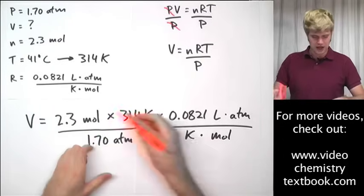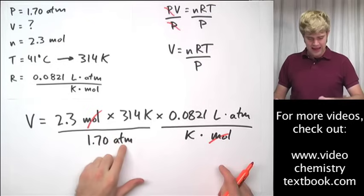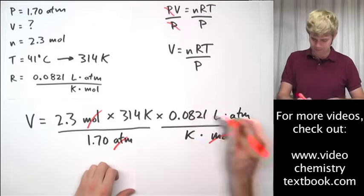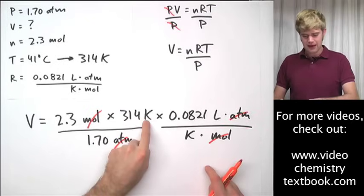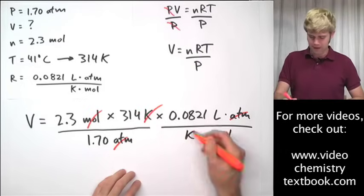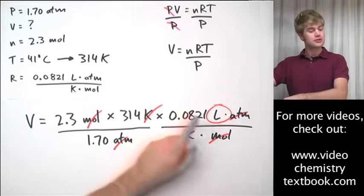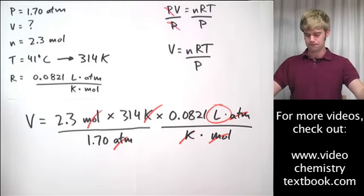Moles up here, moles down there. atm down here, atm up there. Those cancel out. Kelvin up here, Kelvin down there, all right? Which means that I'm left with only liters and that makes sense because I'm solving for volume. Okay?